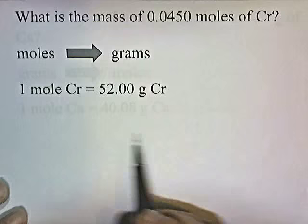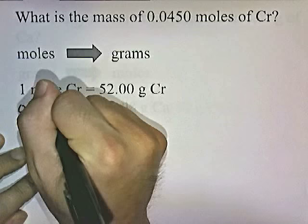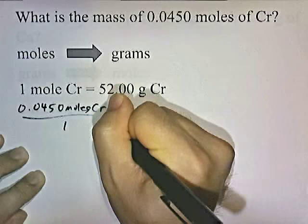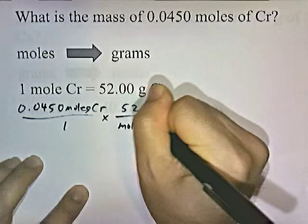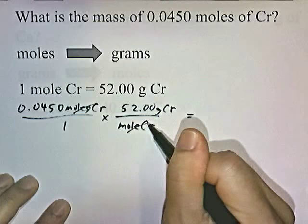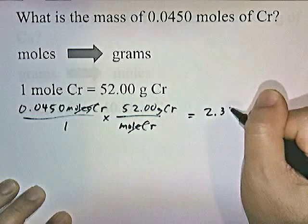Let's write this number as a fraction: 0.0450 moles of chromium over 1. Moles to grams — I've got moles on top, I want to get rid of it. So I'll put a mole of chromium on the bottom and 52 grams of chromium on top. Moles of chromium cancel; we're left with grams. If you work that out, you should get something close to 2.34 grams of chromium. Again, this is a rounded answer.